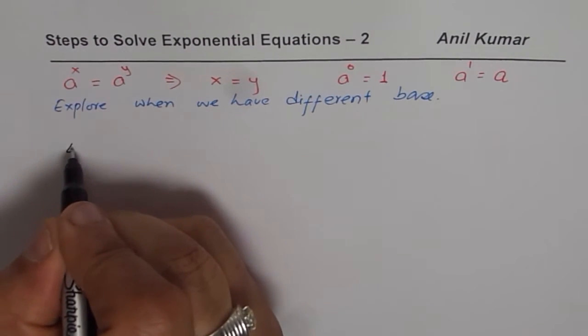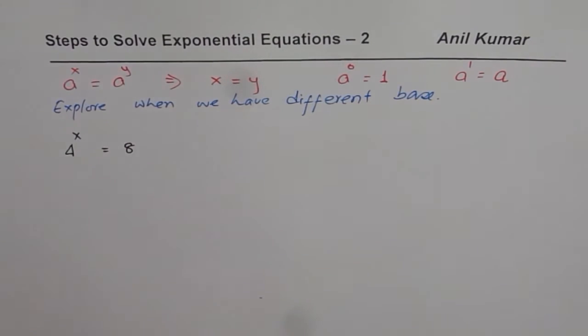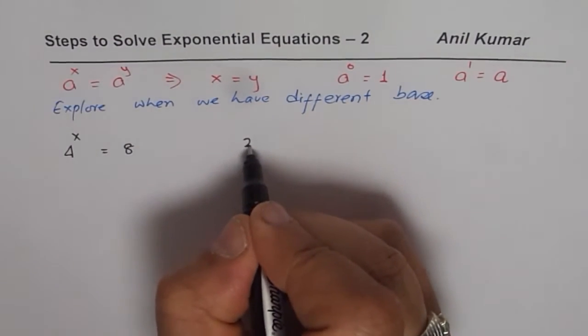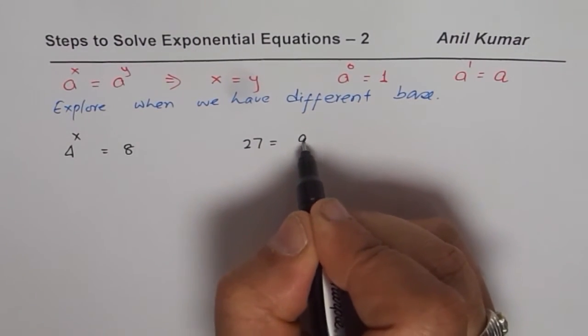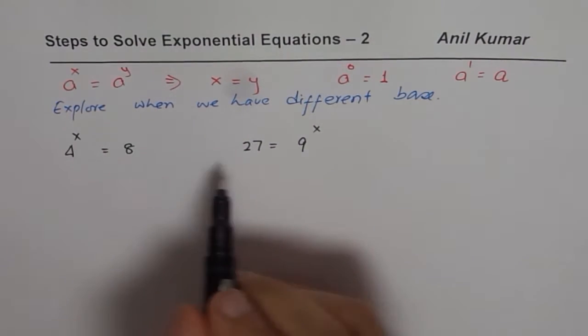So what I'm trying to say here is, if my question is 4 to the power of x is equal to 8, so 8 and 4 are different. So then what is x? If I write, let us say, 27 equals to 9 to the power of x, you understand? Both are different bases. Now, we will see how to solve this.